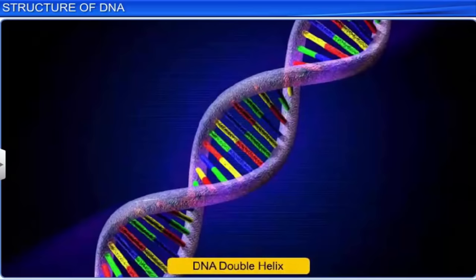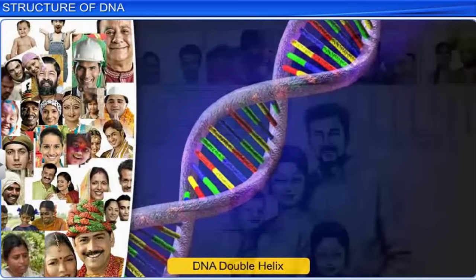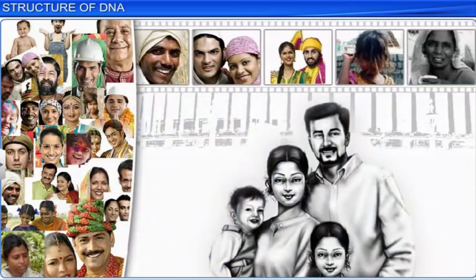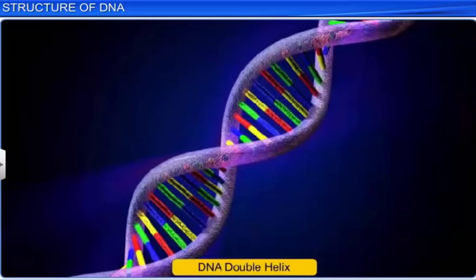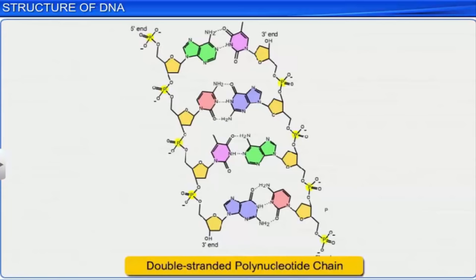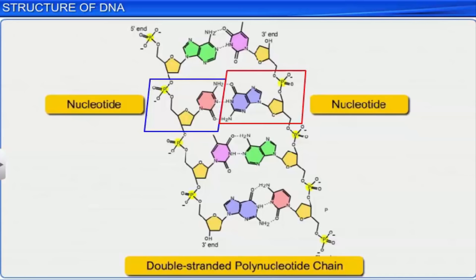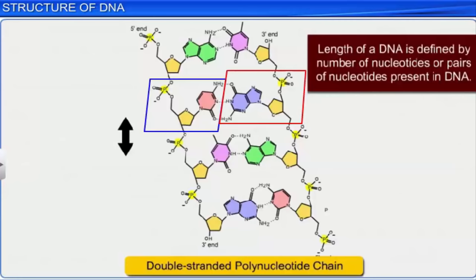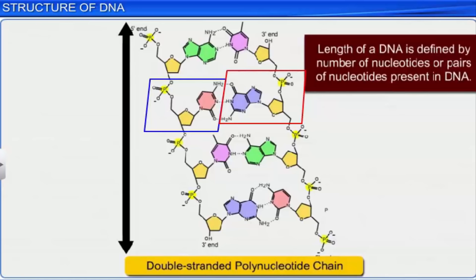Did you know that DNA, or deoxyribonucleic acid, in all human beings is 99.9% identical? It is that one-tenth of 1% difference that makes us all unique. DNA derives its name from deoxyribonucleic acid, a type of nucleic acid. Nucleic acids are made up of polynucleotide chains, which are formed by several nucleotides or molecules that make up the structure of DNA when bonded together. The length of a DNA is defined by the number of nucleotides or pairs of nucleotides present in the DNA.